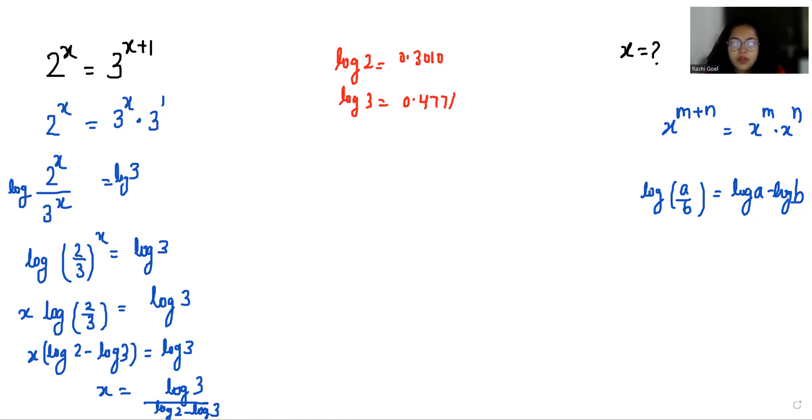So now we can put the values. x is equals to 0.4771 by 0.3010 minus 0.4771, so x is equals to 0.4771 by negative 0.1761.